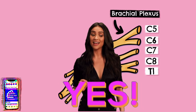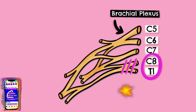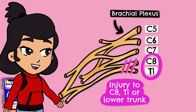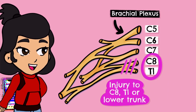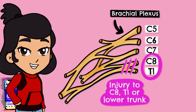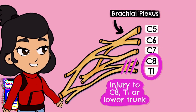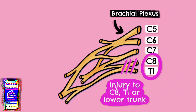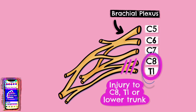Klumpke's palsy is the eponymous name for a C8 and T1 nerve root lesion. This is rare in childbirth but occasionally results from arm presentation — the arm emerging from the birth canal first — and the subsequent traction or abduction from the baby's trunk. There are three characteristic signs for this palsy. The sensory deficit will follow the C8 and T1 dermatomes. The patient will also get deficits in the ulnar nerve and the median nerve, since these arise from the medial cord which is derived from C8 and T1 nerve roots. These two nerves travel down into the forearm and hand to supply both the muscles that flex the wrist and the intrinsic muscles of the hand.